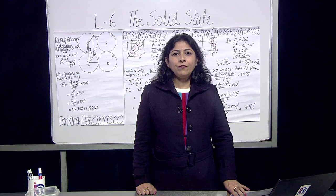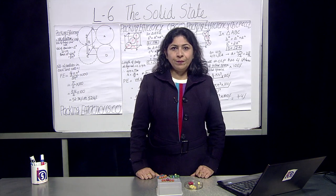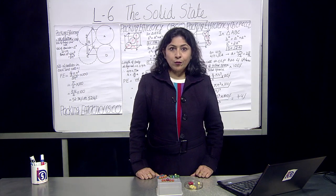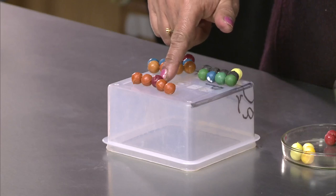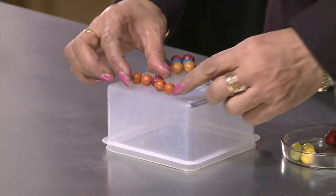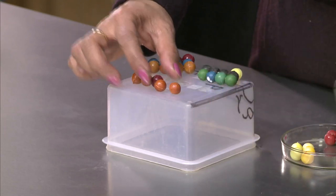Closed packed structure in one dimension: as you know, the atoms are very closely packed and we are assuming atom as a sphere. You can see over there, this is a three dimension. Now in one dimension, how the atoms are closely packed — you can see over here, this is one dimension and as we assume, atom is closely packed.